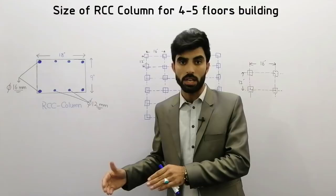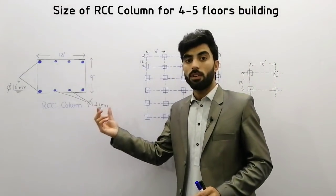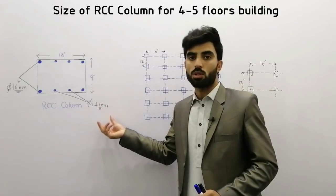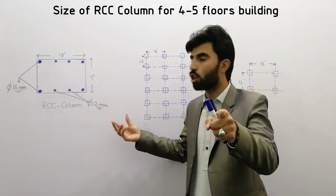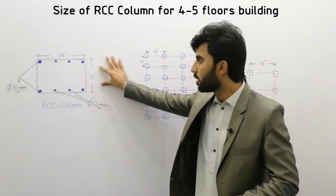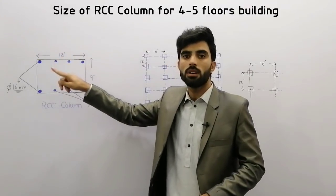Let's start - size of RCC column and also its reinforcement details. Remember that for 4 to 5 storey building, size of the column you can select and you can use for your own project is 9 inch by 18 inches.